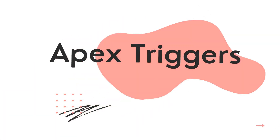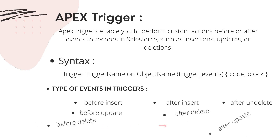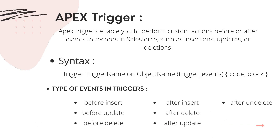Apex Triggers enable you to perform custom actions before or after an event occurs on a record in Salesforce, such as insertion, updates, or deletion.